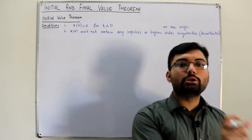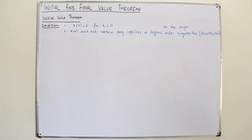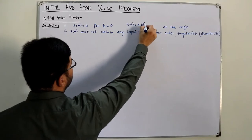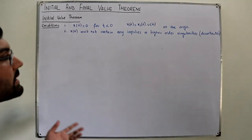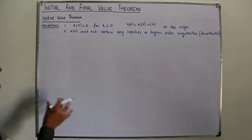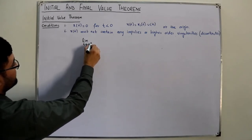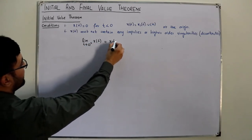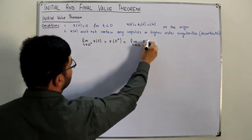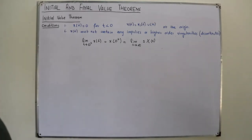If the signal is 0 for some value of positive time, it would not be considered. Now what does the theorem say? It says that if you approach the origin from the right side — limit t approaching 0 plus of x(t), which we call x(0+) — this is equal to the limit as s approaching infinity of s times X(s). This is what the initial value theorem is.